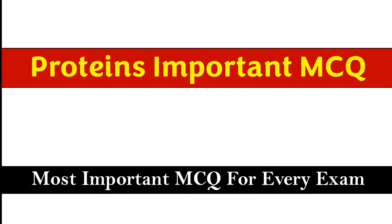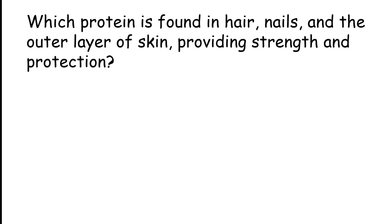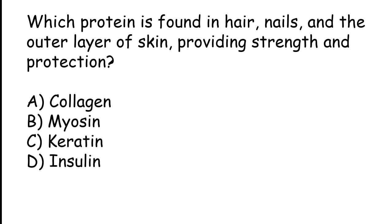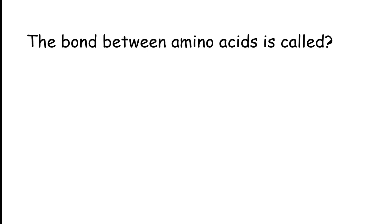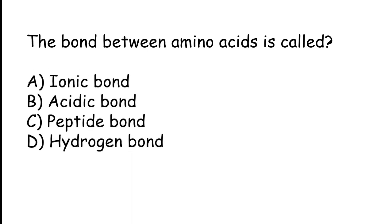Welcome to our channel MCQ1. Today's topic: important protein MCQs. Which protein is found in hair, nails, and the outer layer of skin, providing strength and protection? Options: collagen, myosin, keratin, insulin. The correct answer is option C: keratin.